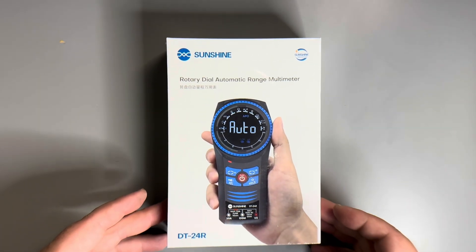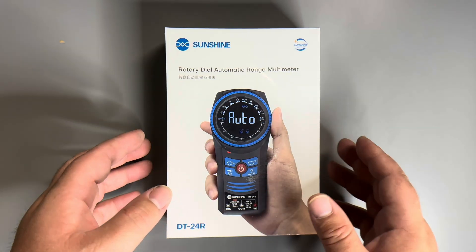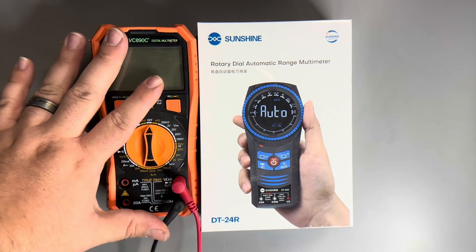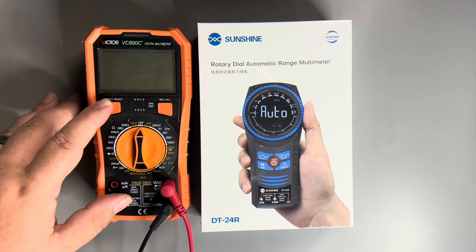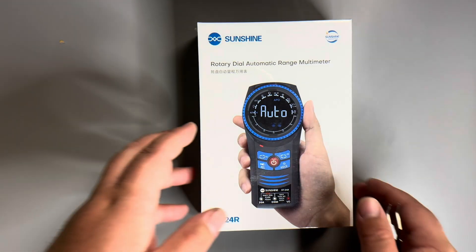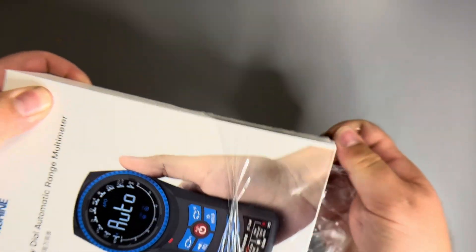Let's take a look at the Sunshine DT-24R rotary dialed automatic range multimeter. As a tech, one of the things that I'm constantly using is a multimeter, mainly looking for continuity in diode mode and voltage. So let's start by opening up this package, and we'll take a look and see what comes inside the box.